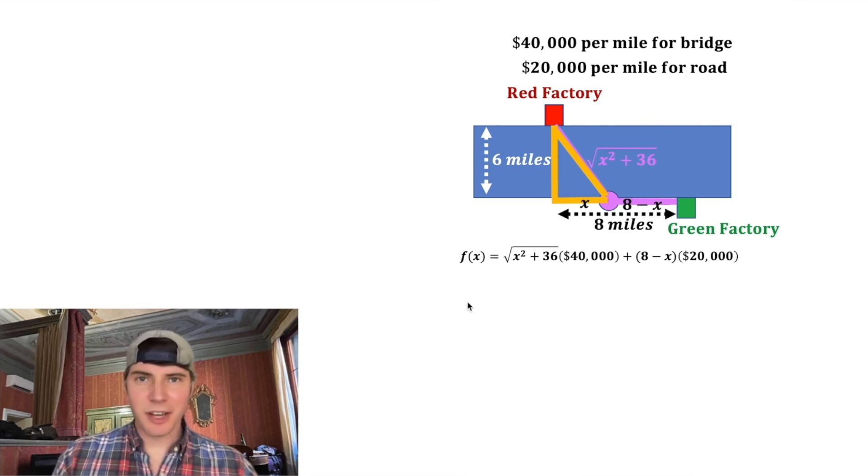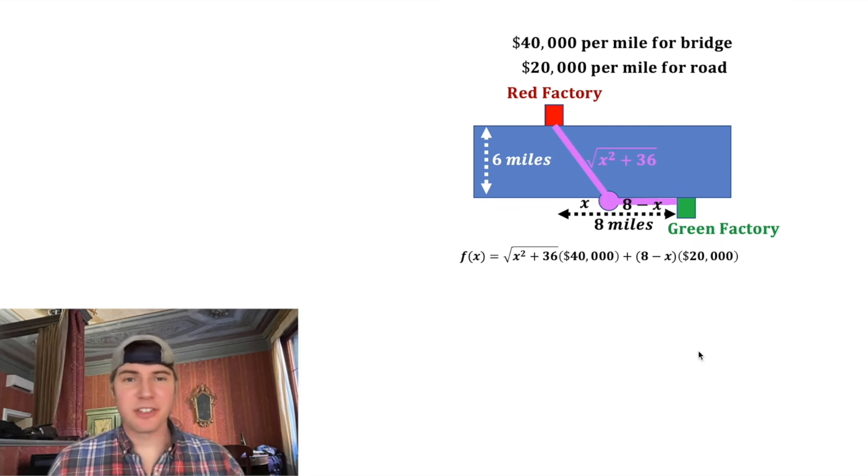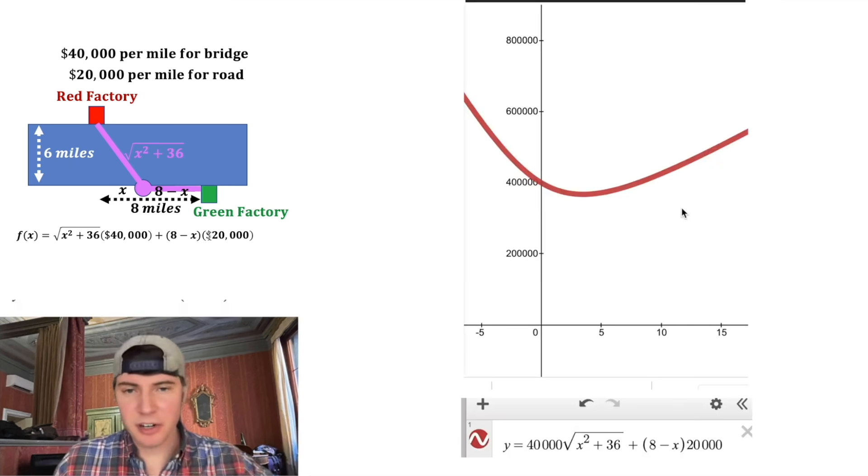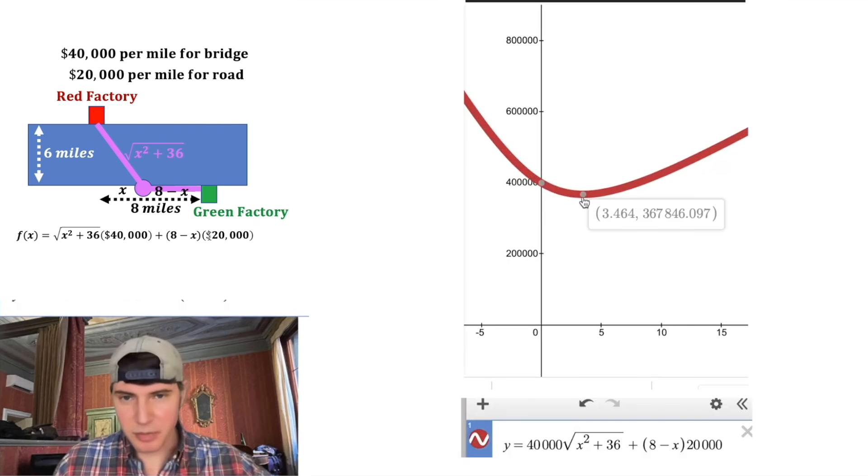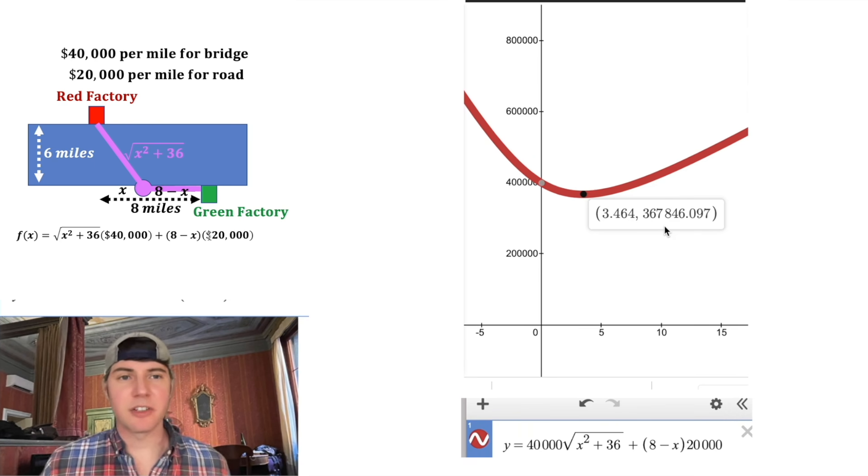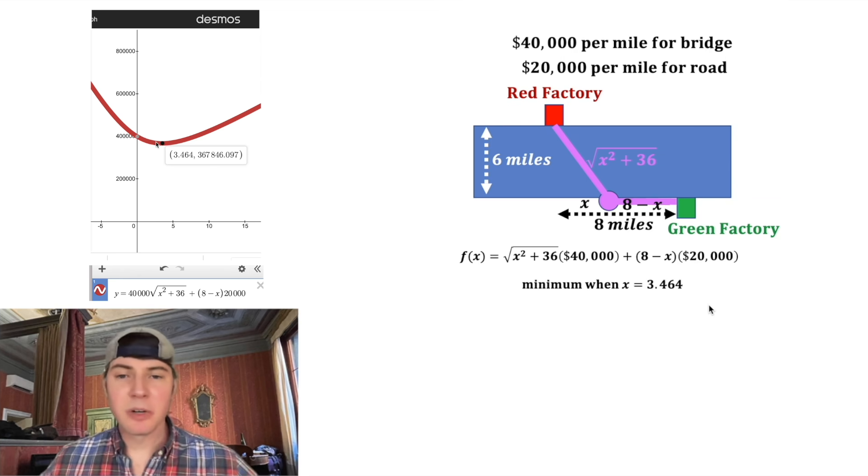There's two ways for us to solve this. First, we could just graph it and find where the minimum occurs. Here's the graph of the function, and if we just click on it, it'll show us the minimum is 3.464. When x equals that, it's going to end up costing us about $367,846.10, and any movement to the right or left is going to end up costing us more.